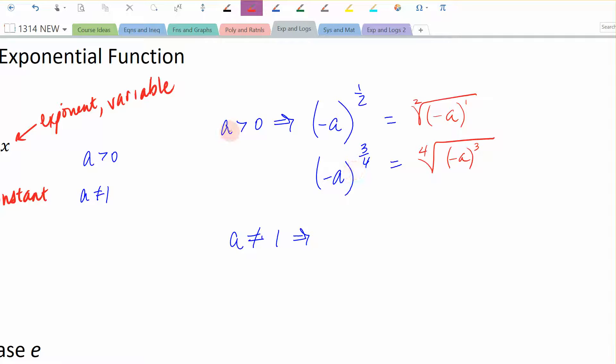So that's how come we're limiting our base a, or we're restricting our base a, that is, to all numbers that are greater than zero. In other words, no negative values. Now, what about the idea that a cannot be equal to one?